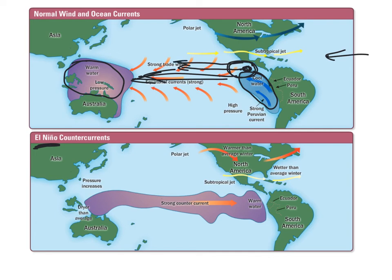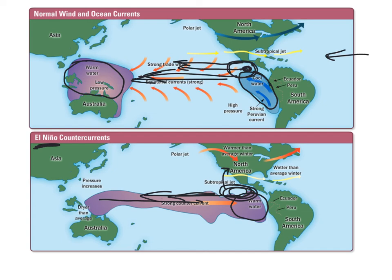During El Niño, so much warm water builds up that it flows back, causing a counter current — we stay warm here and don't get the strong winds and currents moving everything out. The moisture and storms that form, instead of going westward, tend to go northward and we get a lot more moisture. So during normal conditions we generally have a colder winter, but during El Niño we get a slightly warmer winter with a lot more precipitation — which is good for the southwest where we've been having a drought.